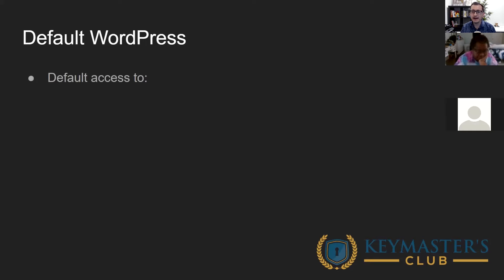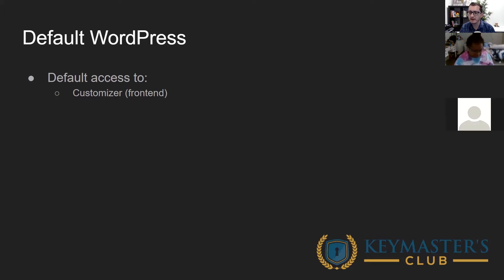Default WordPress — the vanilla WordPress that if you don't do anything crazy to it, that's what you get. That gives you access to things like the Customizer, where you can view the front end of your website and make theme changes, menu changes, widget changes, and stuff like that. You get a lot of control over theme colors, fonts, and similar options, all from the Customizer as you're editing your site.